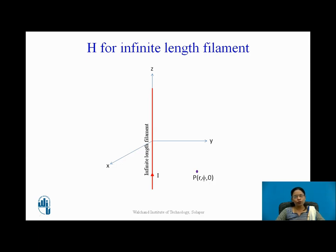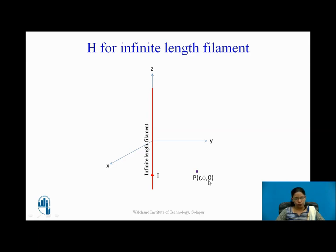Why R, phi, 0? Because point P is at a certain radius from the origin, so R. Point P passes through some plane, so that is phi. And as it is in the XY plane, Z equals 0, so that coordinate is 0. So the coordinates of point P are R, phi, 0.